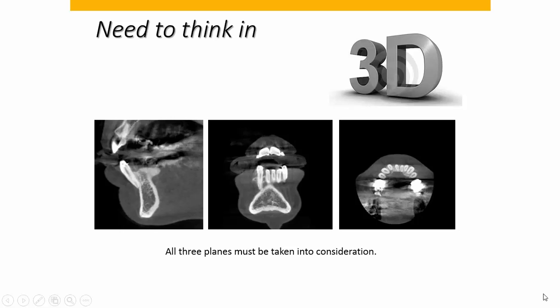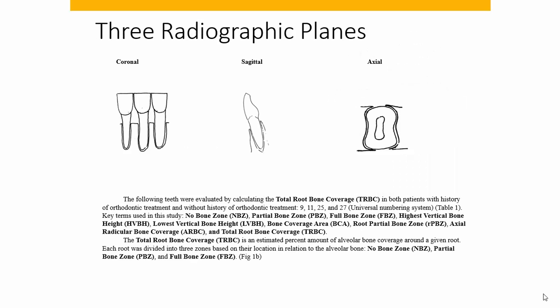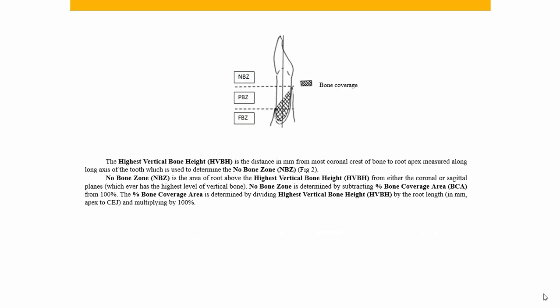We tend as orthodontists to favor the sagittal view because that's what we're used to looking at. We're all used to measuring cephalometric x-rays and looking at that sagittal view, but in fact the other views can be just as important. The method we use to measure the amount of bone coverage that surrounds a root of a tooth incorporates all three planes of space — we use the coronal, sagittal, and axial.